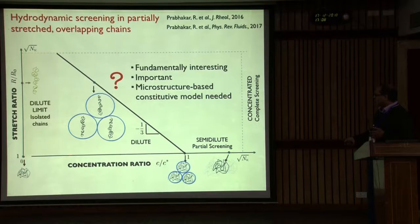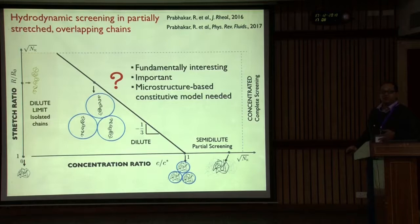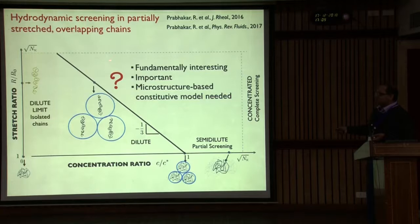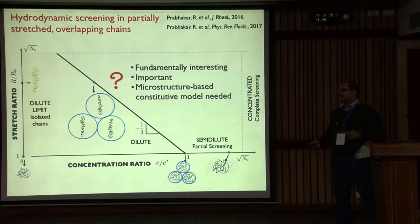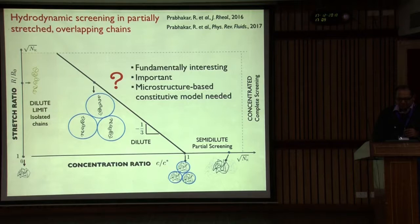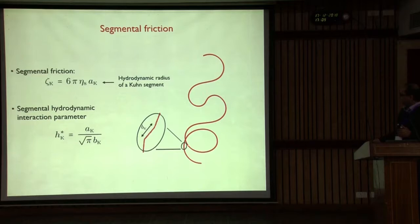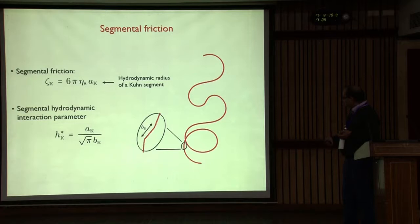For equilibrium coils, C/C* = 1 is the critical overlap condition, and here we have what is called screened hydrodynamic interactions. The phenomenon of hydrodynamic screening is something I'd like to understand: what happens to hydrodynamic screening in this region when molecules partially stretch out and begin interacting hydrodynamically? That's the question I've been trying to understand.